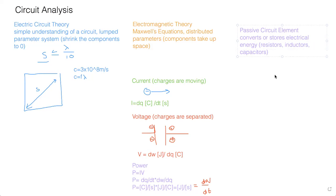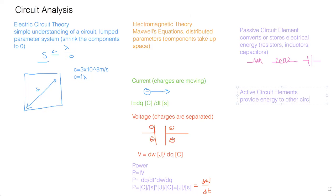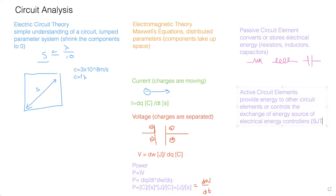Passive circuit elements — resistors, inductors, and capacitors — have nice linear relationships most of the time, so you'll be dealing with Ohm's law. Active circuit elements, on the other hand, provide energy to other circuit elements, or control the exchange of energy — they are sources or controllers of electrical energy. The main examples are BJTs, MOSFETs, and vacuum tubes, highly used as transistors, along with diodes.